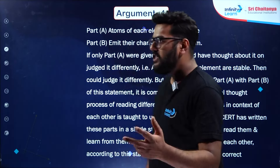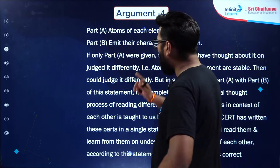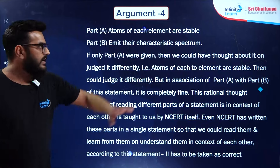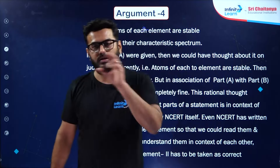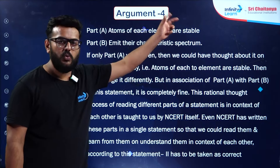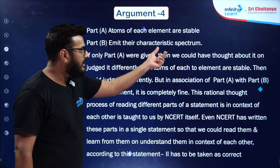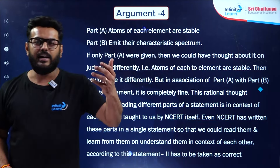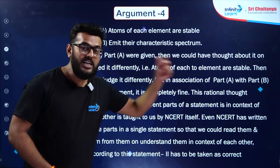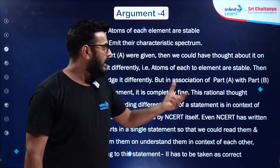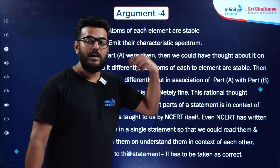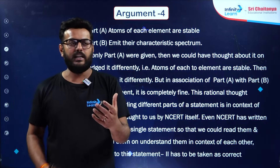Another key point: Statement 2 had two parts — part A: atoms of each element are stable, and part B: they emit characteristic spectrum. These are not two separate statements; they are a single statement with two parts, to be taken as a union. When read together, you naturally think: atoms are stable and they emit characteristic spectrum when electrons move from higher to lower orbits. The crux lies in the characteristic spectrum, not atomic stability in terms of nuclear decay.